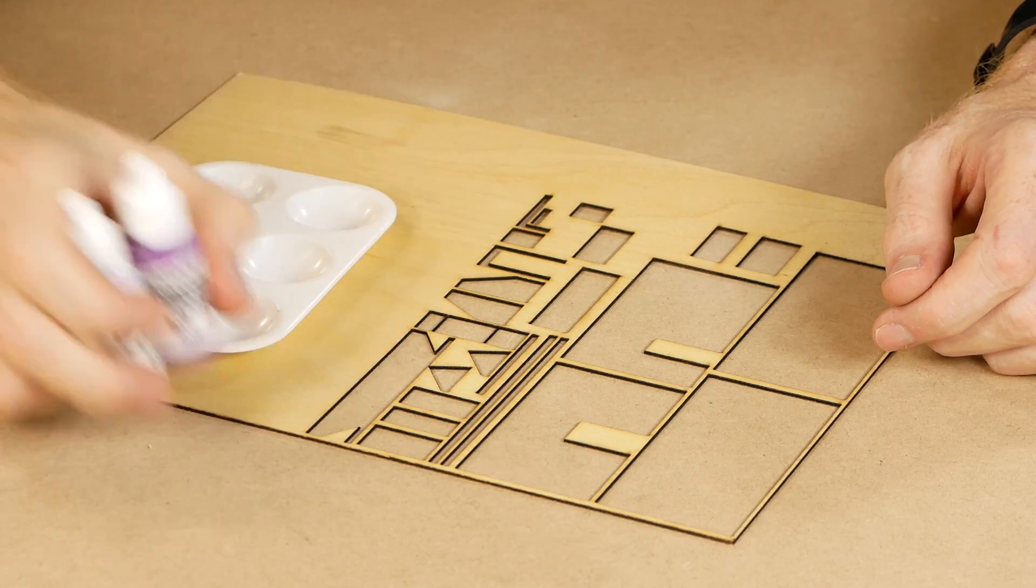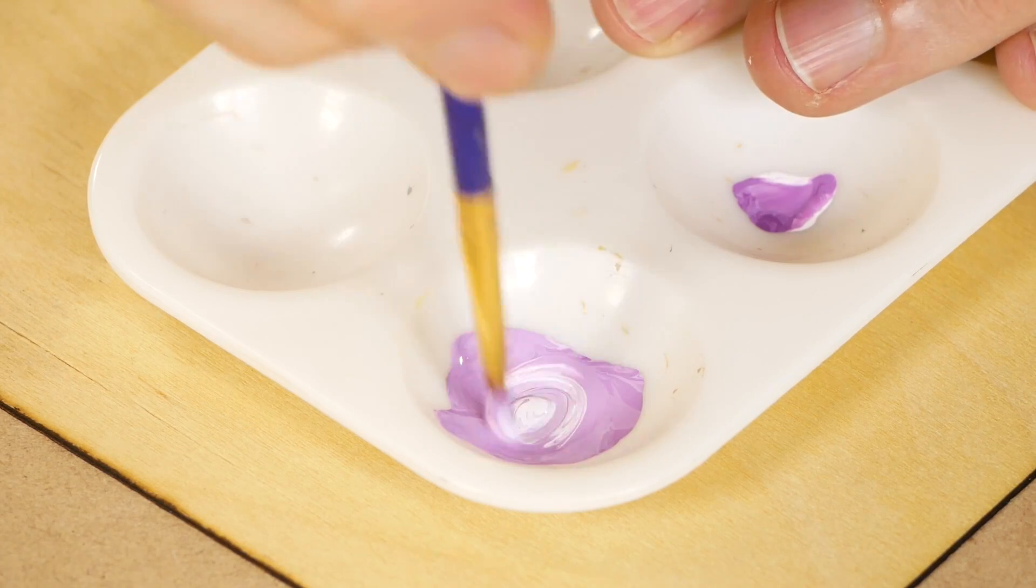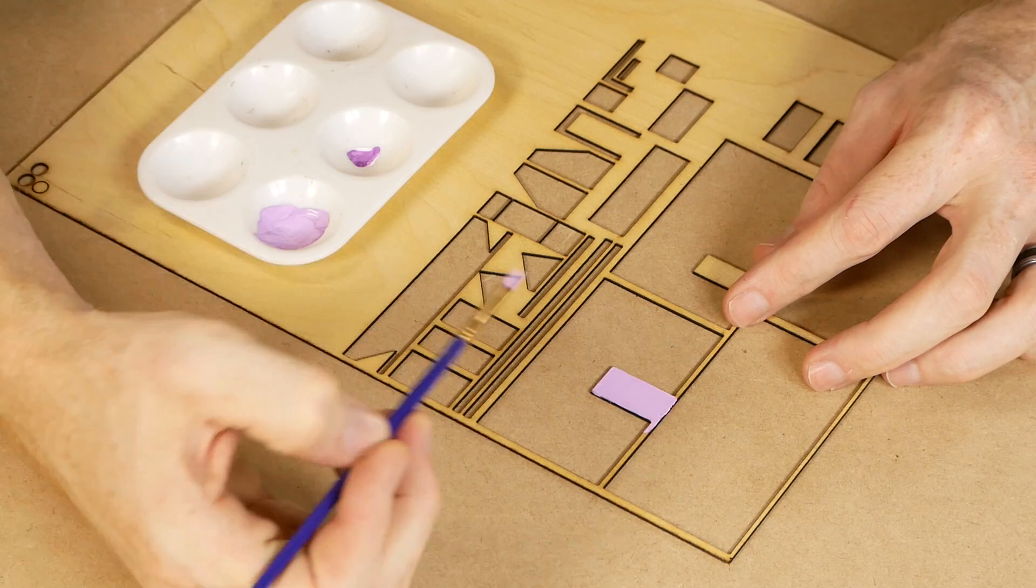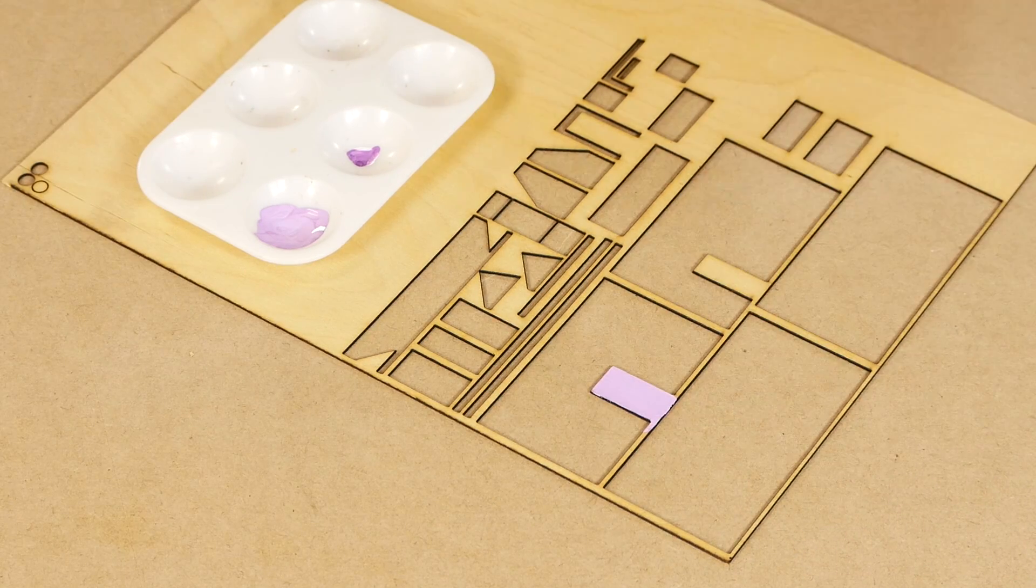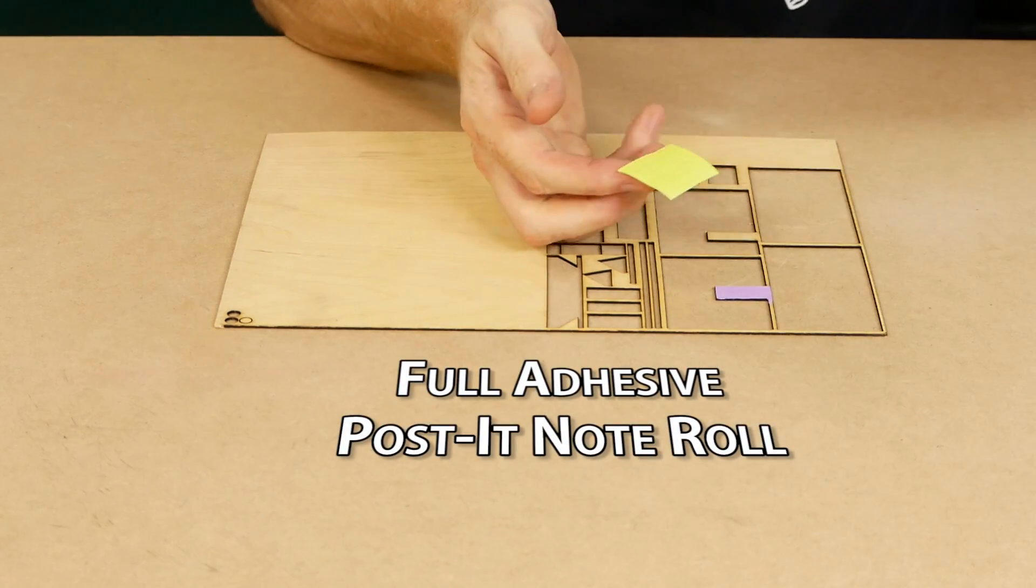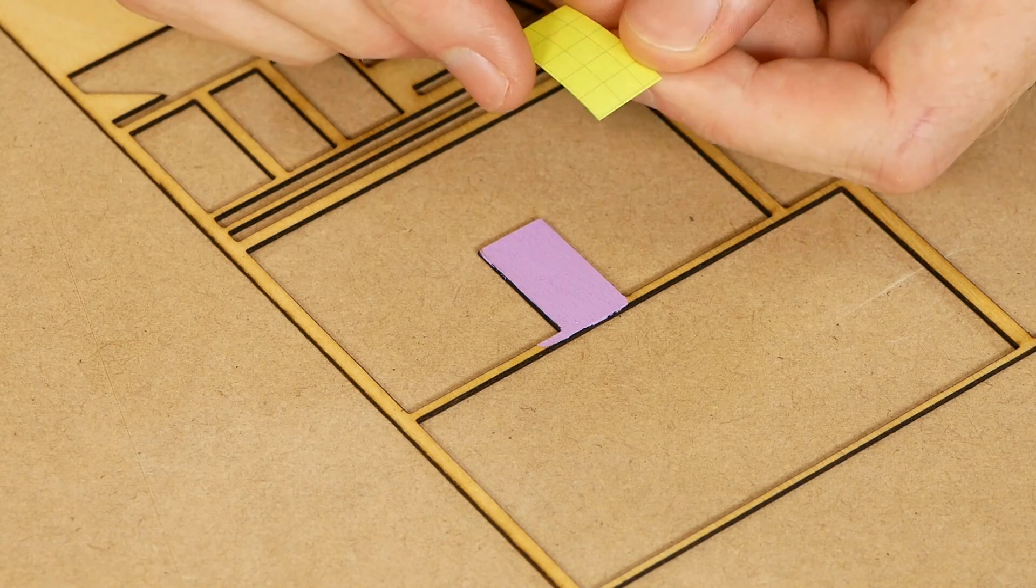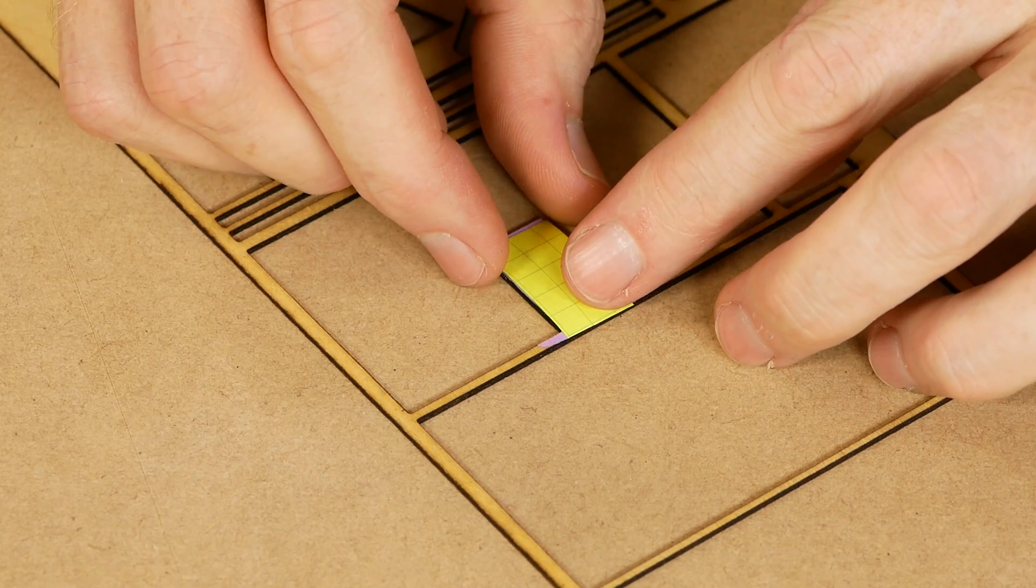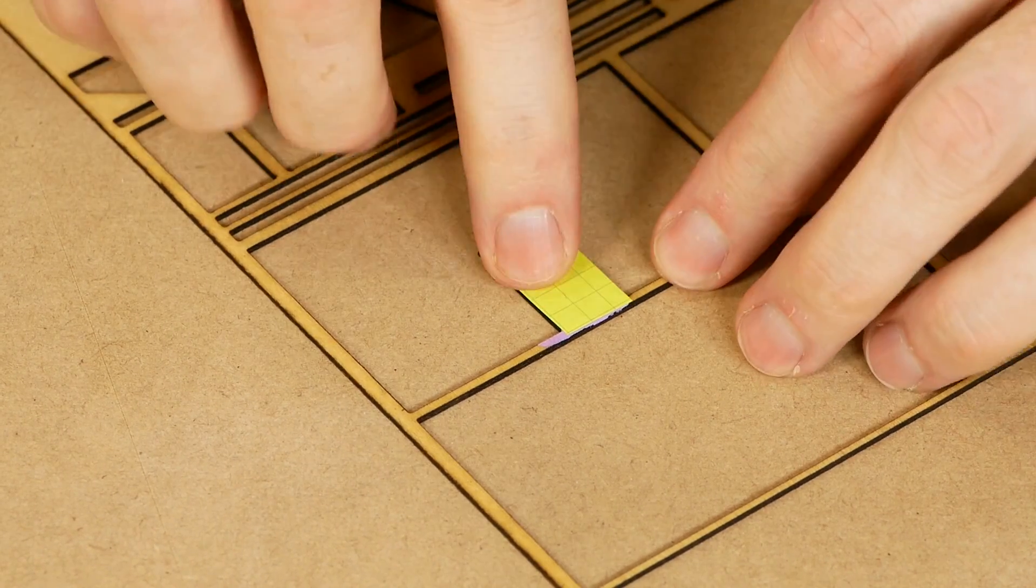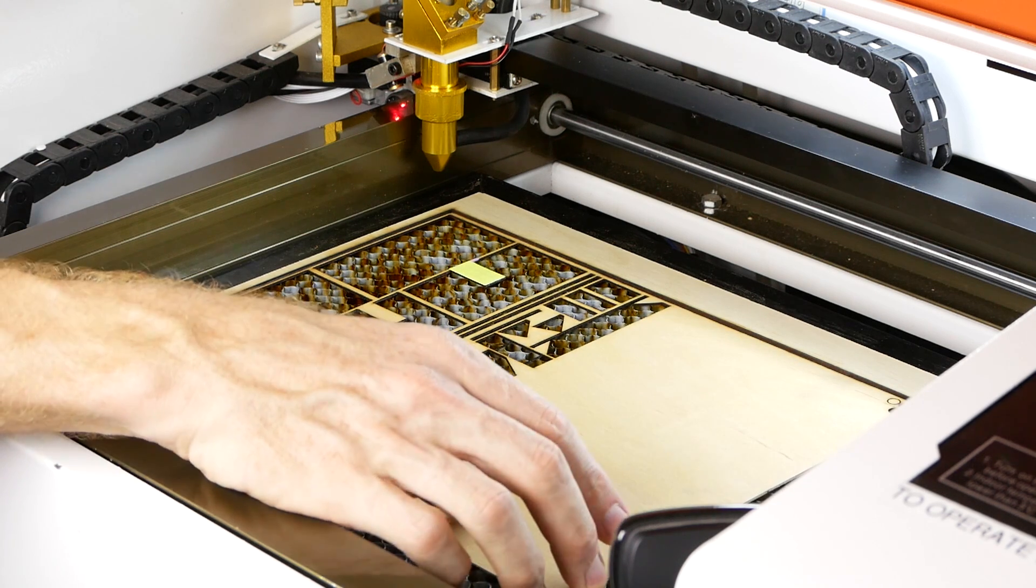The Moe's sign is made using 1.3 millimeter plywood. The sign is engraved using the laser cutter but I first paint the sign a light purple color. Once it's dry I line the sign with some sticky note paper. I use sticky note paper as opposed to masking tape because it's much easier to remove after the engraving is finished.